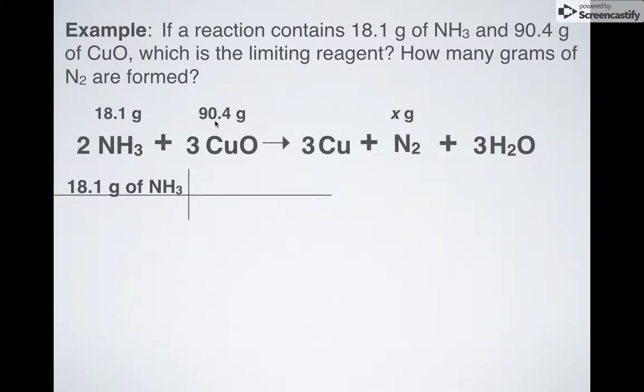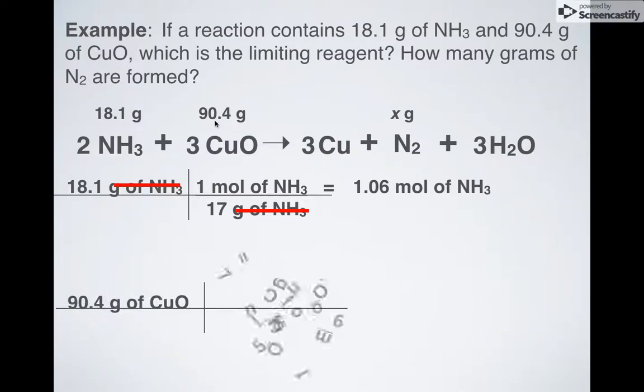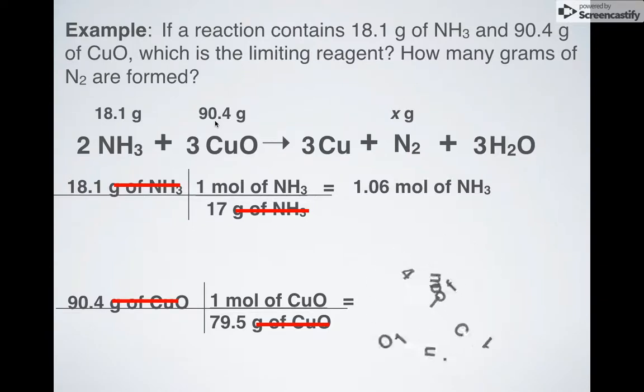Alright, so let's convert. 18.1 grams of NH3. I divide by the molar mass, cancel, and I get 1.06 moles. 90.4 grams of CuO. What's the molar mass of CuO? 79.5 grams, cancel, and I'm left with 1.14 moles.